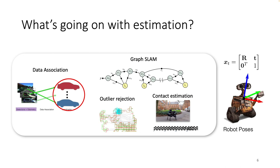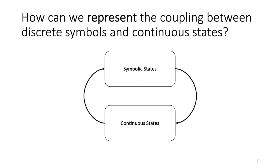And beyond that, discrete symbolic information, like what an object is, can actually help inform the estimation pipeline, for example, to identify measurement landmark correspondences.